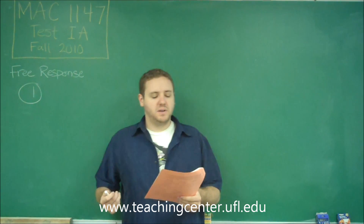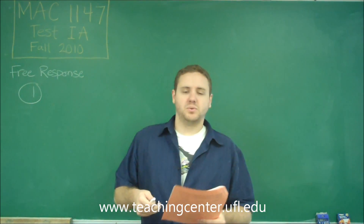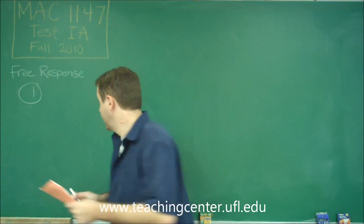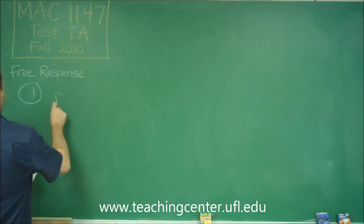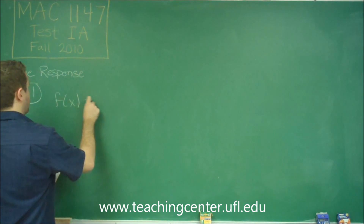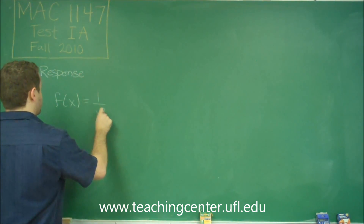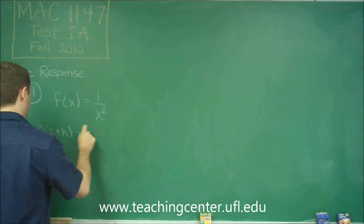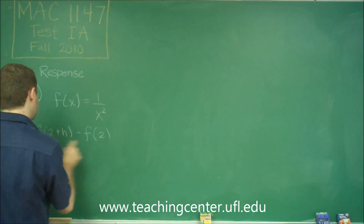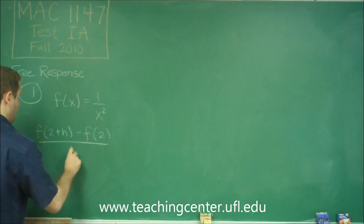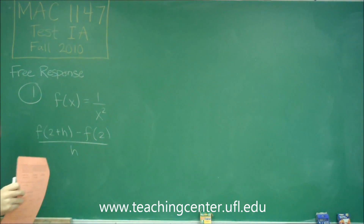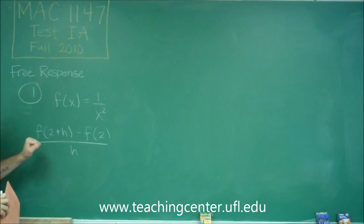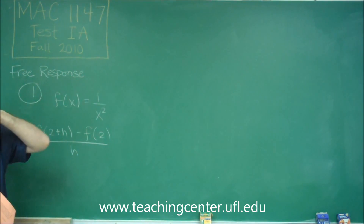For number one on the free response, we're asked to simplify a difference quotient. You're given the formula, and this is really just a matter of plugging in correctly. We have that f of x is equal to 1 over x squared, and we're asked to find the following difference quotient: f of 2 plus h minus f of 2, all over h.